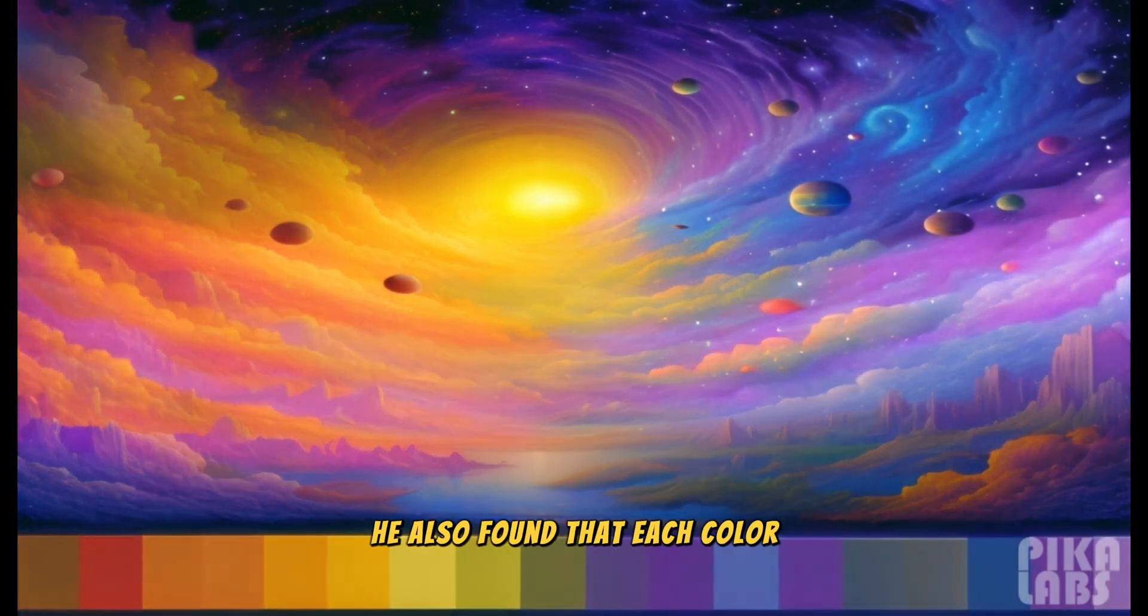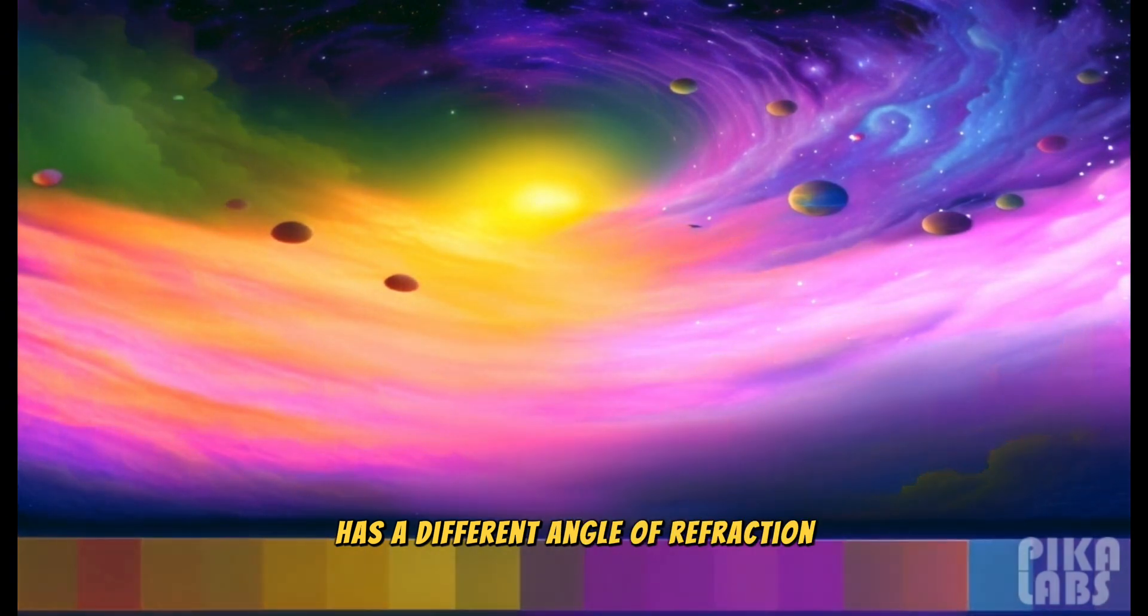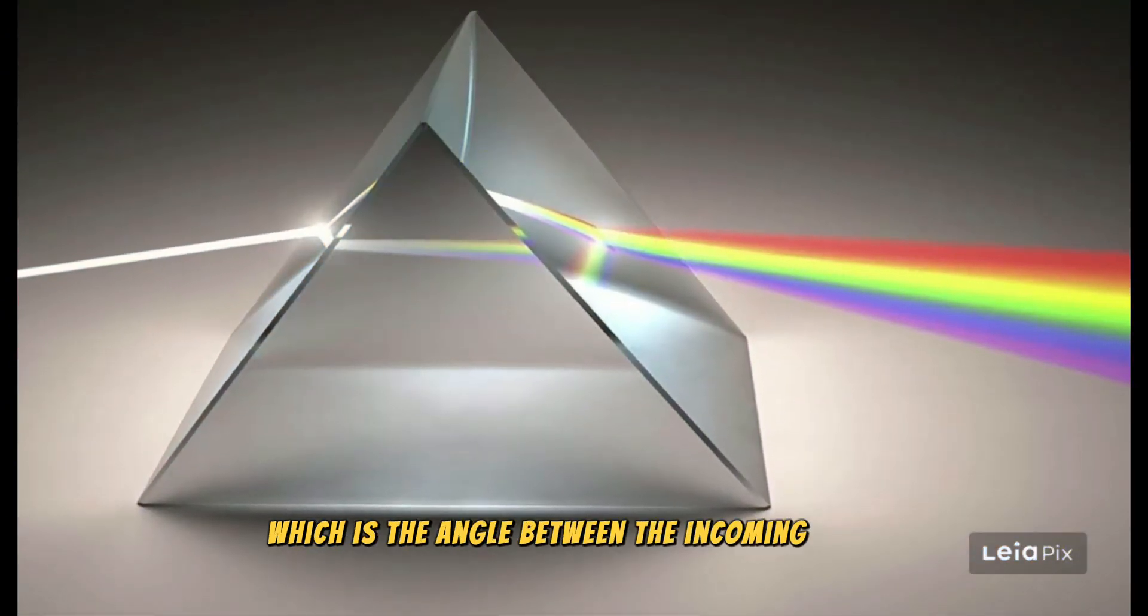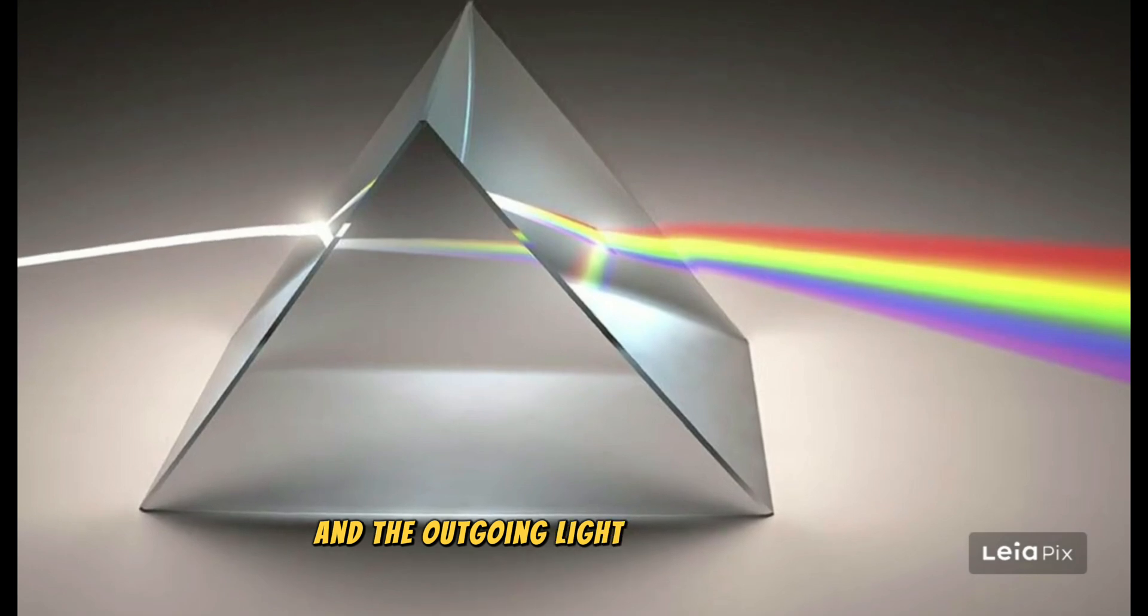He also found that each color has a different angle of refraction, which is the angle between the incoming light and the outgoing light from the prism.